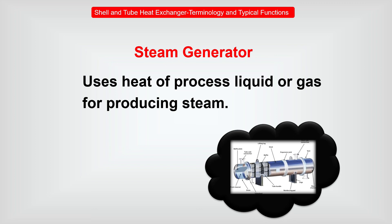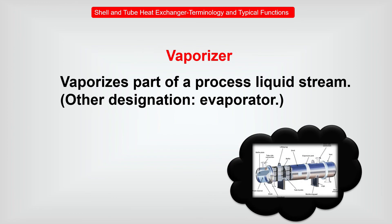Steam generator: uses heat of process liquid or gas for producing steam. Vaporizer: vaporizes part of a process liquid stream. Other designation: evaporator.